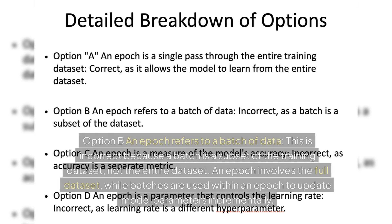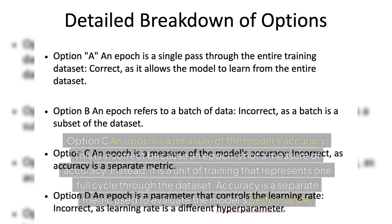Option B: an epoch refers to a batch of data — this is incorrect. A batch is a subset of the training dataset, not the entire dataset. An epoch involves the full dataset, while batches are used within an epoch to update model parameters incrementally.